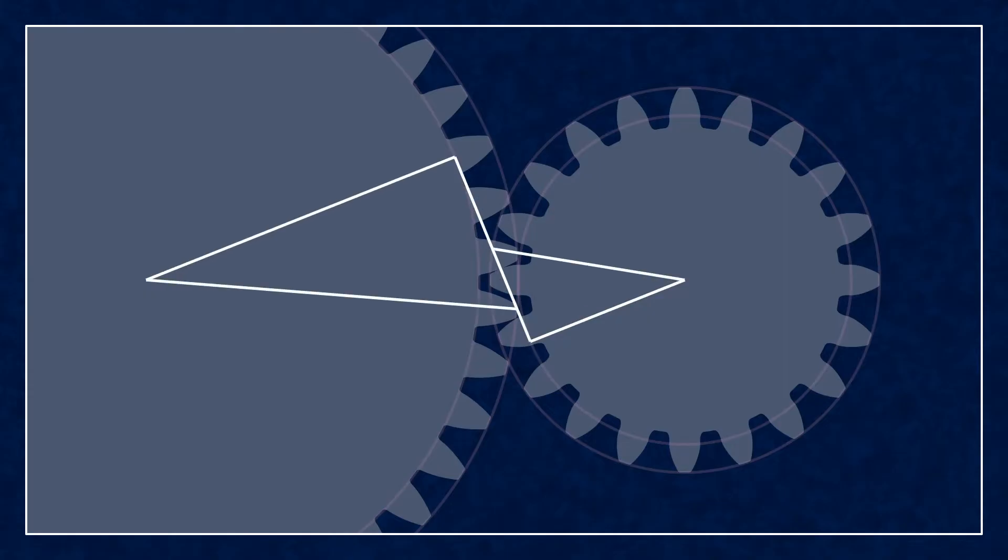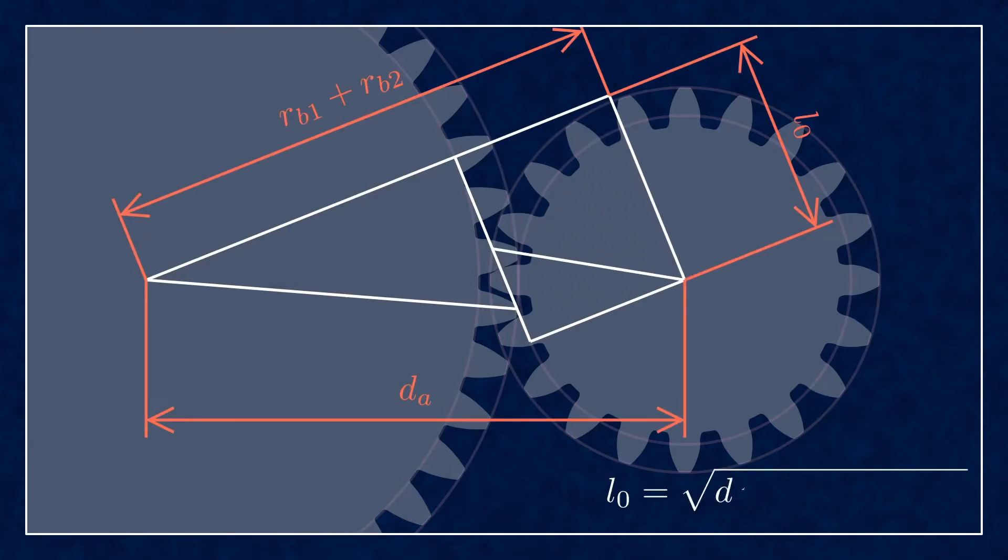Start with two gears and triangles drawn using the base circles, addendum circles and the line of action. You can calculate the length of the line of action L0 using the Pythagorean theorem on the axial distance dA and the sum of the base radii.